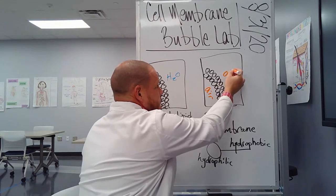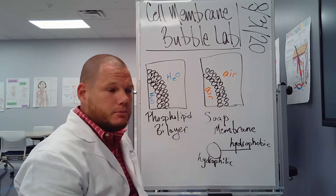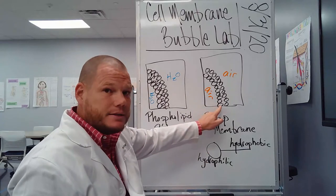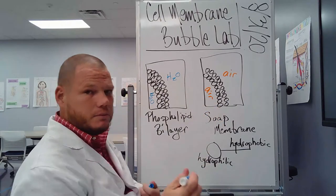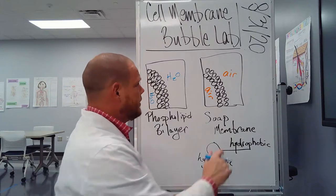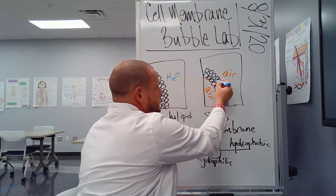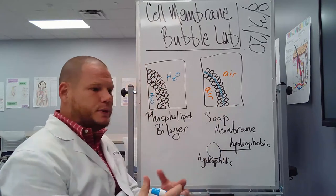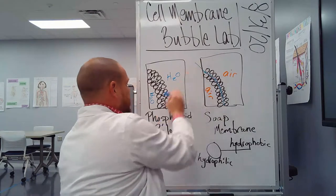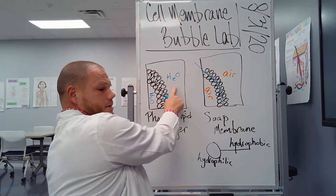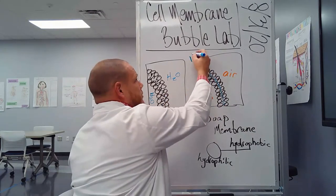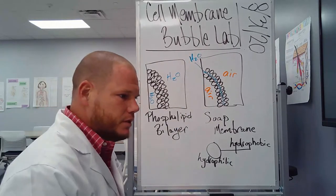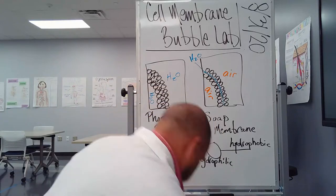And air is outside of the soap bubble. And so what the soap bubble does, because these heads are attracted to water, they're hydrophilic, what soap molecules do is they create a really thin film of water in between there. So our water, instead of being inside the cell and outside of the cell, is actually trapped in between the soap molecules.